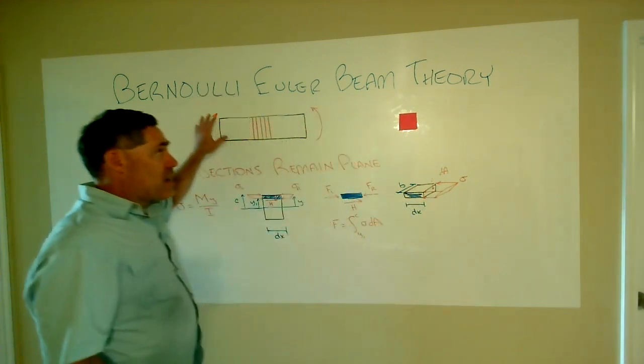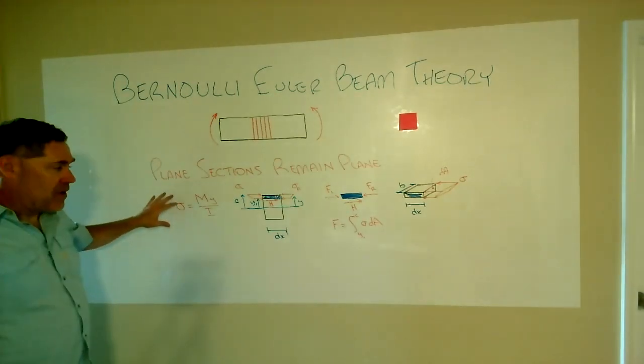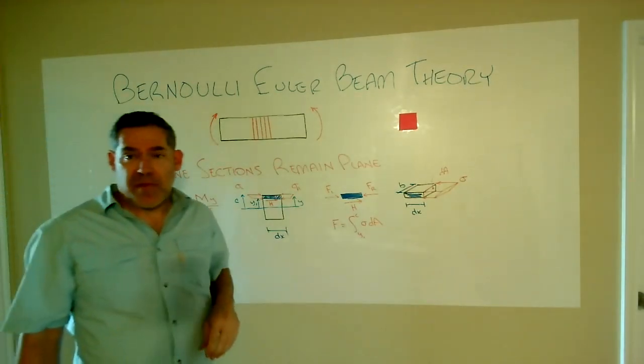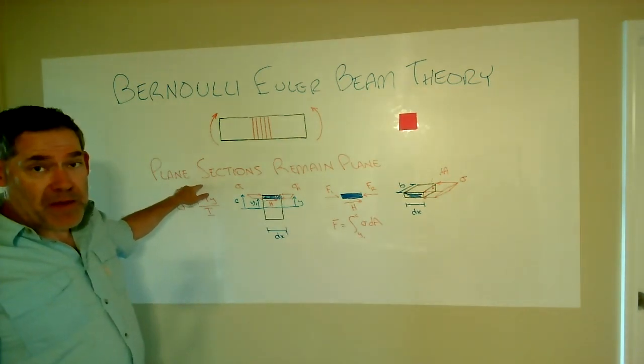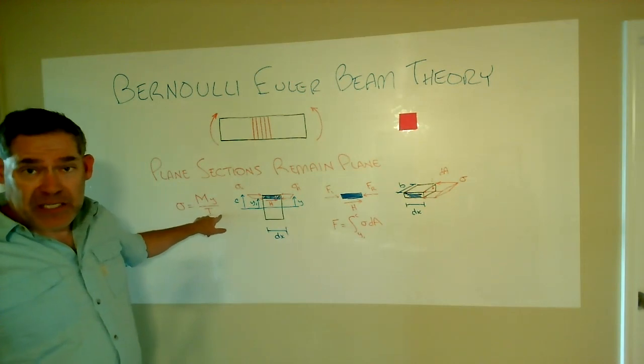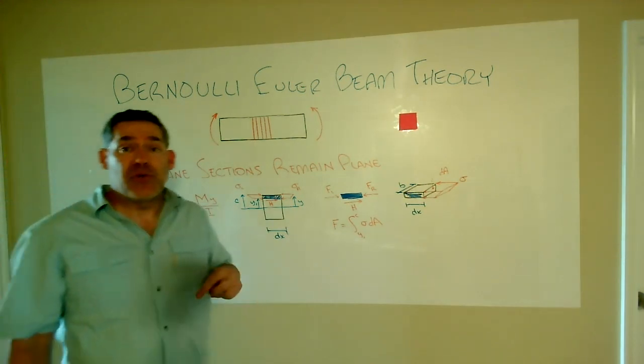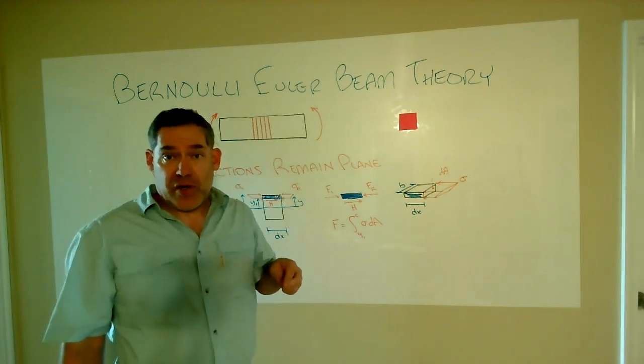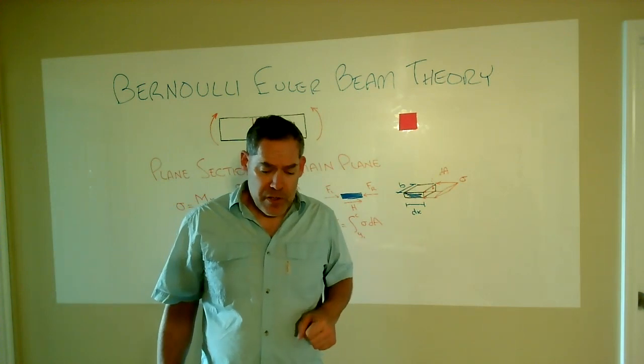Now let's go back to basic Bernoulli Euler beam theory, from which we developed the whole sigma equals My over I model to begin with. One of the crucial critical aspects of that model was plane sections remain plane. And we're going to continue to use this normal stress model to get us to the horizontal shear stress and then to the shear stress on the cross section.